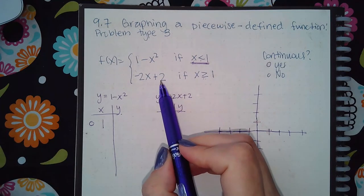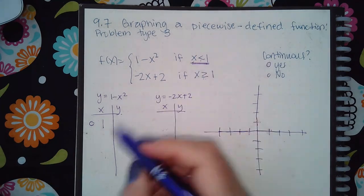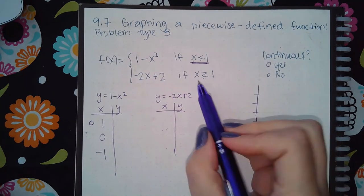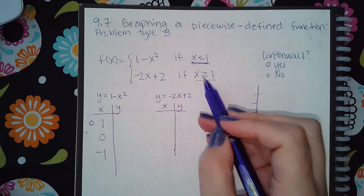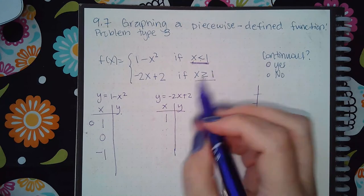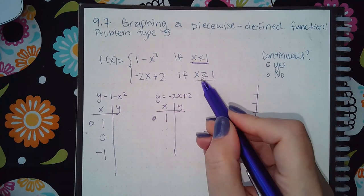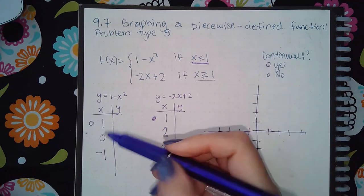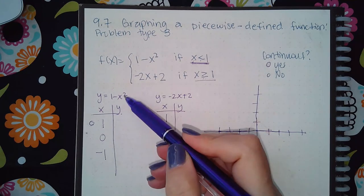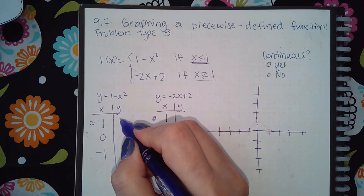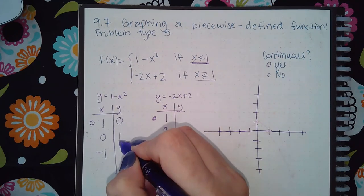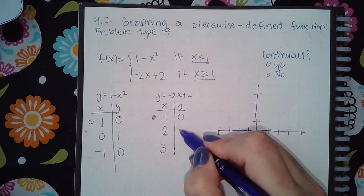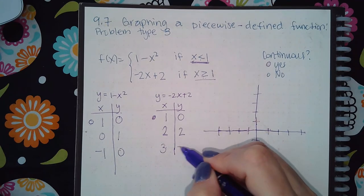I need to pick x values less than 1 to get three points, so I'll use 0 and negative 1. For the second condition, I pick 1 as the endpoint — because of the equal bar, it will be a solid dot — and then x values greater than 1, so 2 and 3. Plugging each into the equations, I get y values of 0, 1, 0 for the first set, and 0, 2, negative 4 for the second.